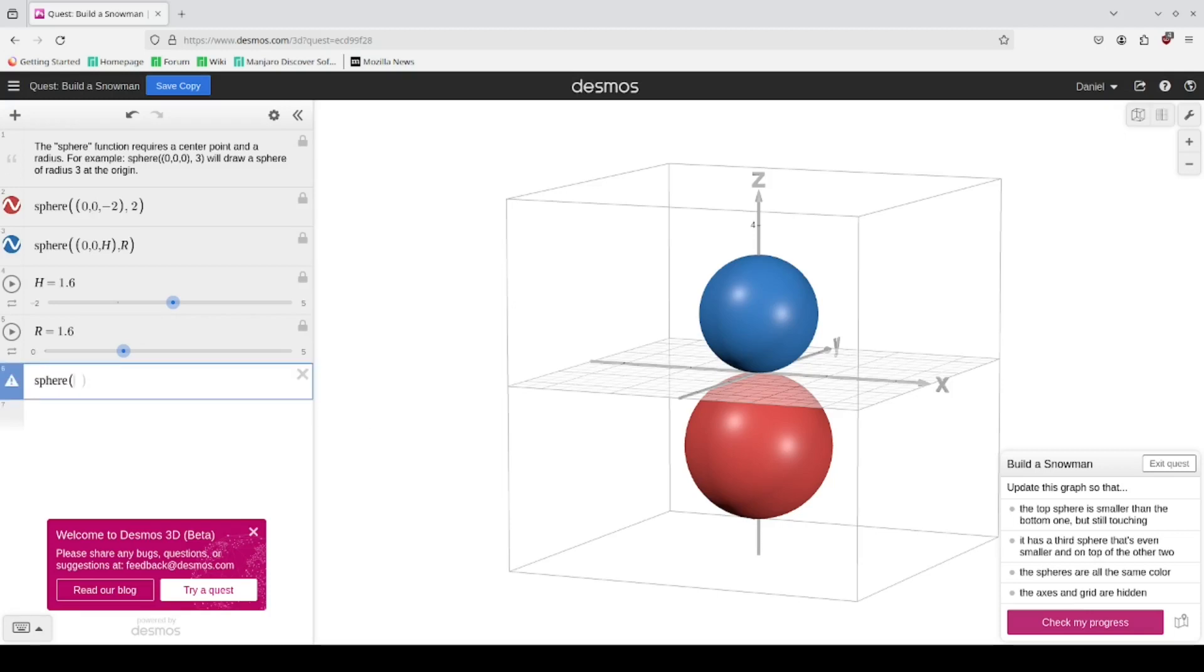This is where I get to introduce you to the sphere function. So the first point is the origin, so this is x, y, and z. Obviously we're going to change the z, and we're going to give it a radius of one.